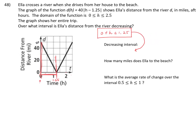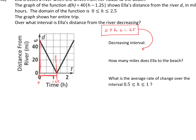Next question — how many miles does Ella drive to the beach? Remember we started up here: she's 50 miles from the river. After 1.25 hours she crosses the river, so she's driven 50 miles so far. Then she drives across the river on the other side and the mileage increases back up to 50. So she drove 50 miles to get to the river and then 50 miles past the river — that's 100 miles total to the beach.